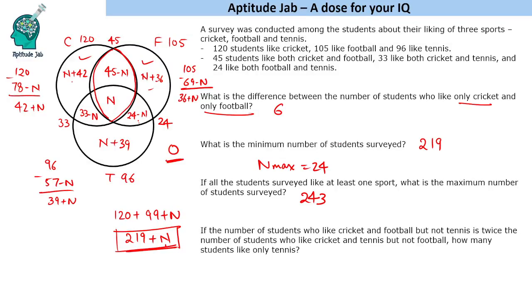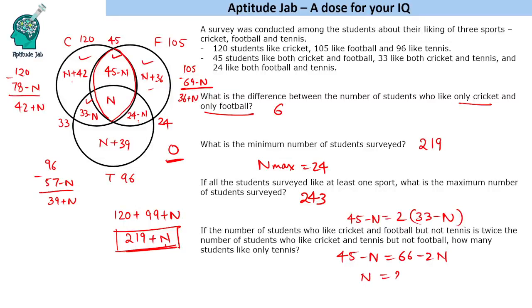The next question says: if the number of students who like cricket and football but not tennis (45 minus n) is twice the number who like cricket and tennis but not football (33 minus n), how many students like only tennis? Setting up the equation: 45 minus n equals 2 times (33 minus n), which gives 45 minus n equals 66 minus 2n, so n equals 21. Only tennis is n plus 39, which equals 60 students.